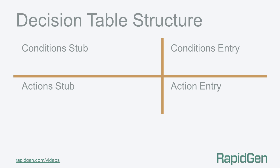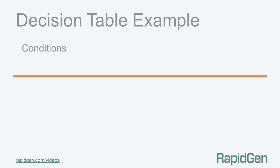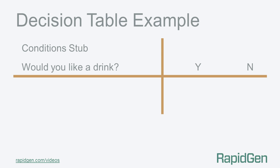Let us first consider the decision table in two halves. The upper part contains the conditions. This part is equivalent to a test or question — in some computer procedures, the if section. So a simple example of a condition stub would be 'Would you like a drink?' with the corresponding entry yes or no.